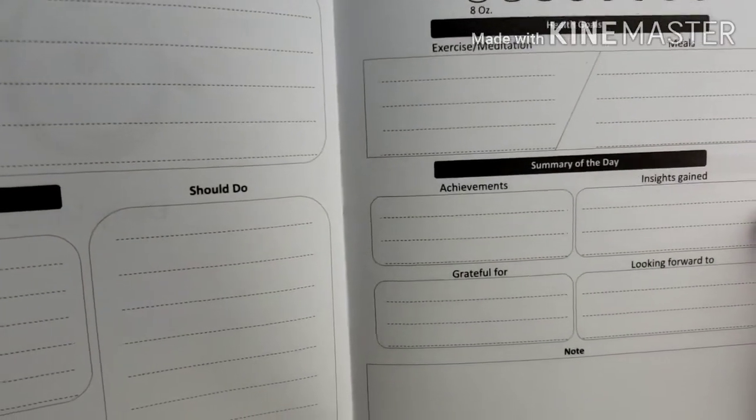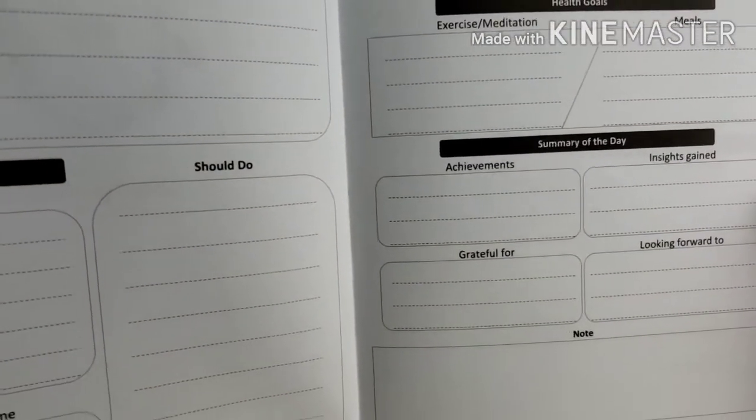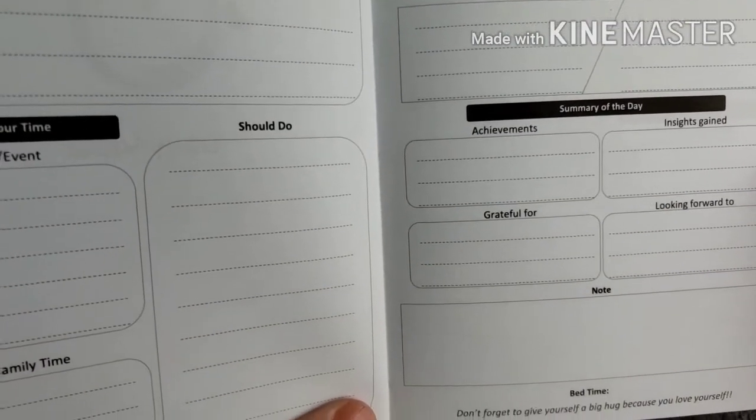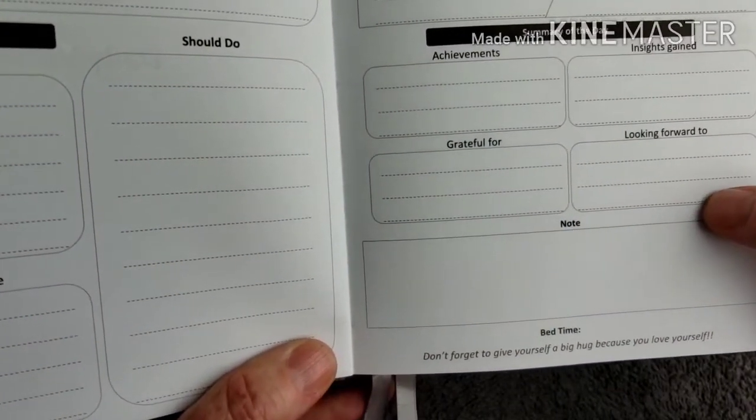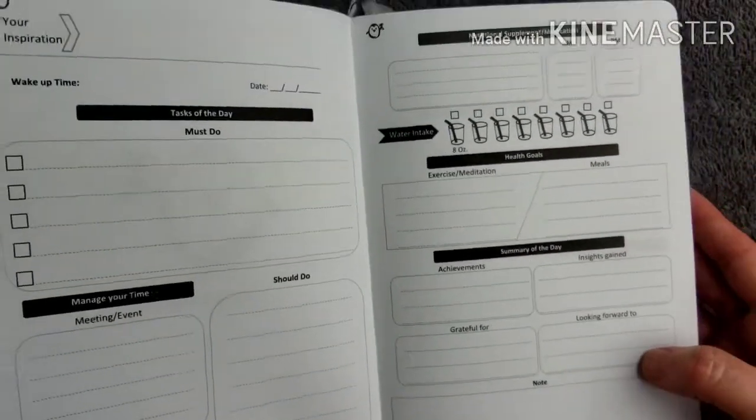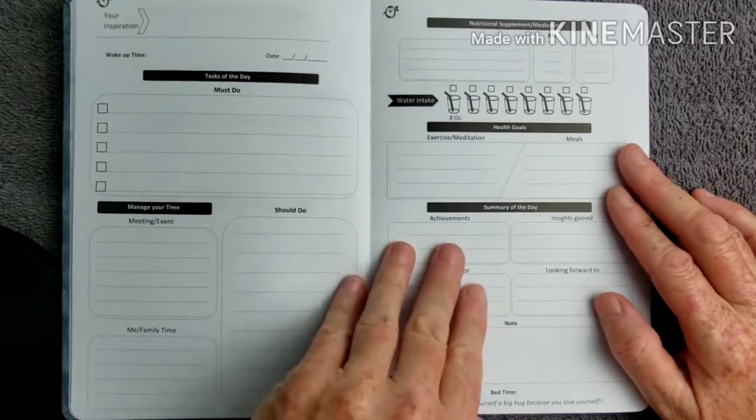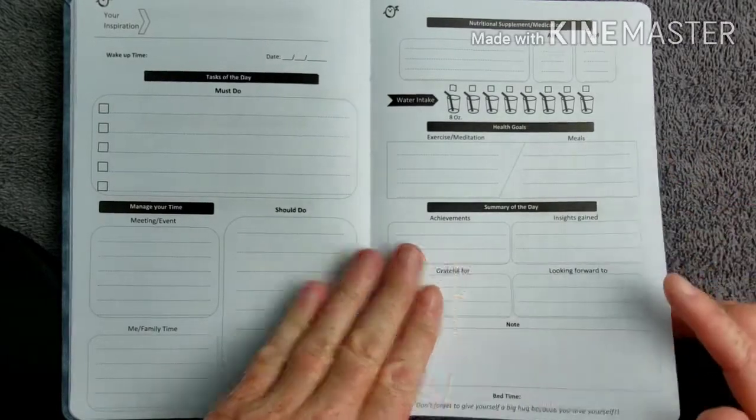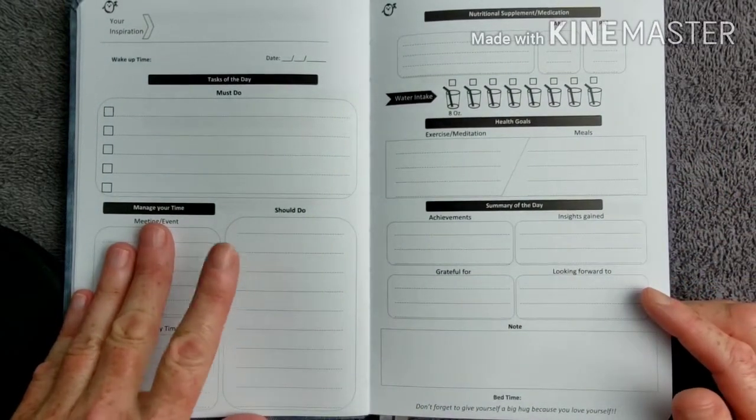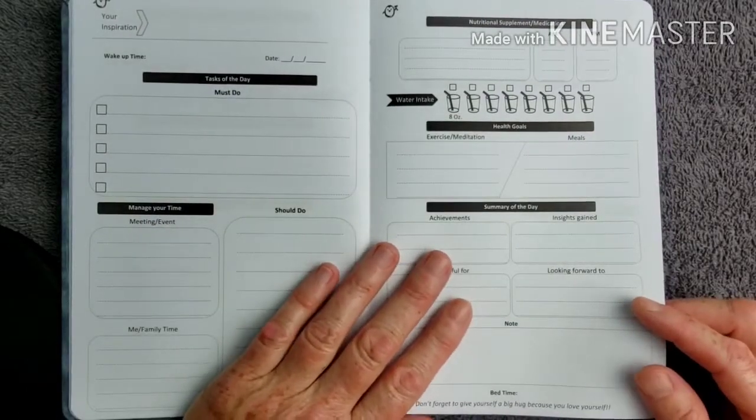Then a summary of the day, achievements, insights gained, grateful for, looking forward to, and a place for notes. So this is only going to last you four months if you use it every day. But you do have six months of the monthly. So I guess you can plan in advance.